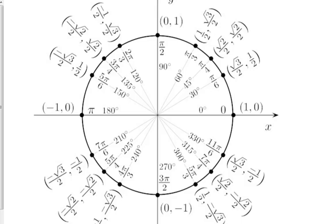So this is the unit circle. What it does is it gives you the values of sine and cosine for all of these special angles between 0 and 2π.